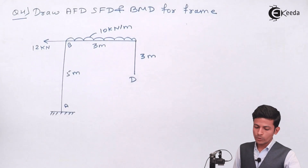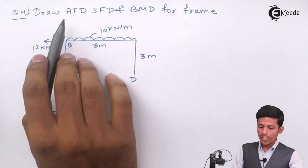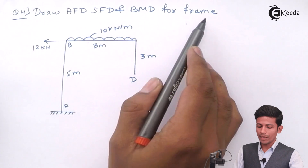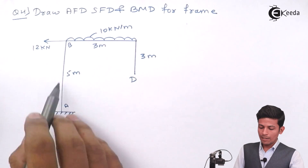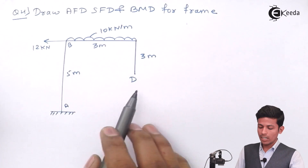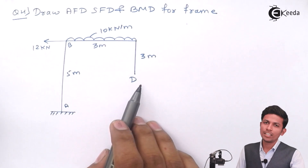See this is your question, friends. Draw the AFD, SFD, and BMD for frame A, B, C — one end is fixed and the other part is free.